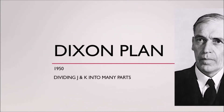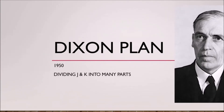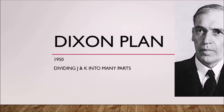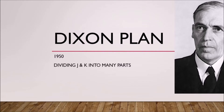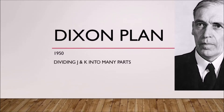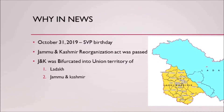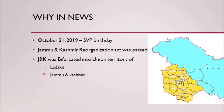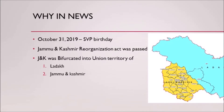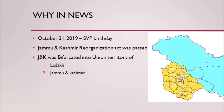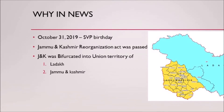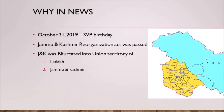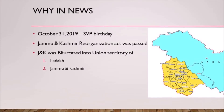Hello everyone. Today we are going to talk about the Dixon Plan of 1950, which recommended dividing Jammu and Kashmir into two or more parts. Although this plan was proposed long back after the partition of India and Pakistan, as the question arose as to who gets Jammu and Kashmir, it came into news recently with the parliament adopting a bill to make Jammu and Kashmir into two union territories, carving out Ladakh from the rest.